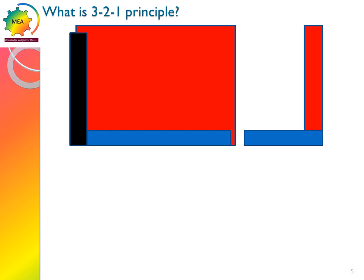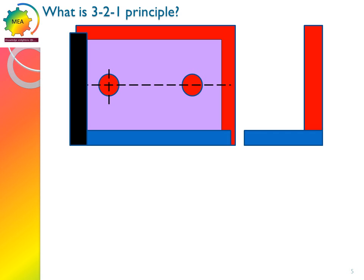Let us consider this datum reference frame. The red color simulator is datum A, the blue color simulator is datum B, and the black color simulator is datum C.